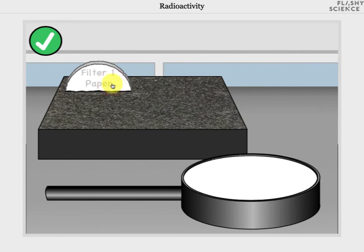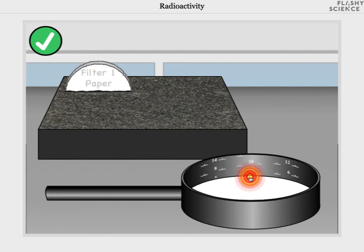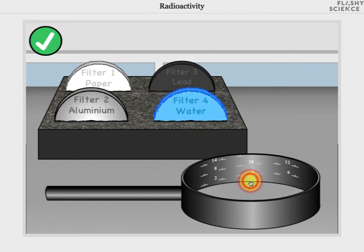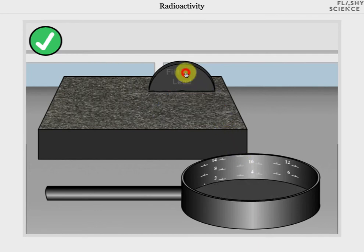If we want to decrease the thickness we simply click on the material that's in the filter holder until it's all disappeared and we return to the original four choices. Now I'm going to add a few millimeters of lead and then return to the main screen with this in place by clicking on the green and white confirm button in the top left of the screen.